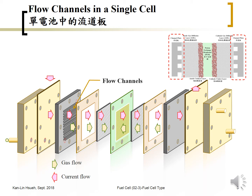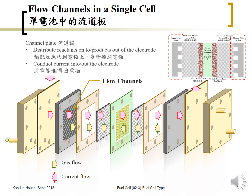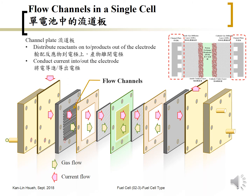So the flow channel's function is to distribute the reactant in and the product out. During operation you will generate water, and the water will be carried out through the flow channel outside the single cell. The flow channel also conducts the current in and out to the external circuit.